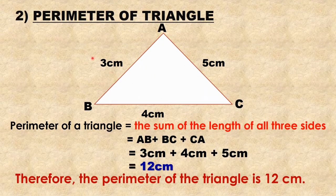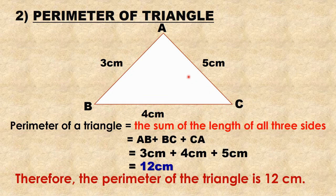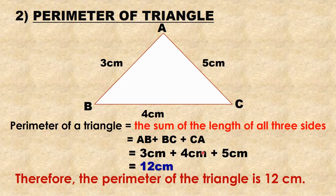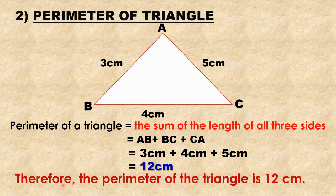Second example: perimeter of a triangle. The sides of the triangle are AB = 3 cm, BC = 4 cm, CA = 5 cm. The perimeter of a triangle is equal to the sum of the lengths of all three sides. Perimeter = AB + BC + CA = 3 cm + 4 cm + 5 cm = 12 cm. Therefore, the perimeter of the triangle is 12 cm.